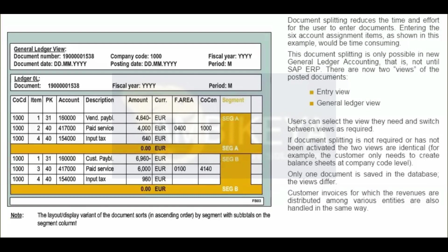As well as the split, the illustration also shows how the segment entity is inherited by the accounts payable and tax items in the document.